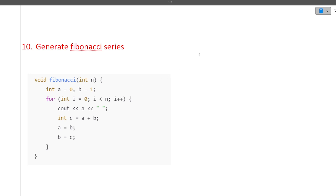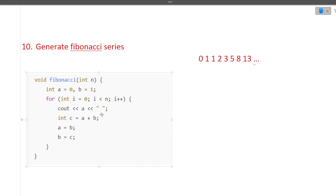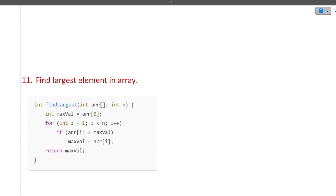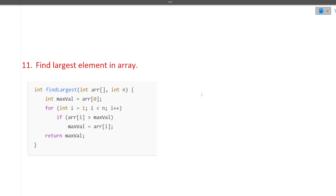The next question is: generate the Fibonacci series. Starting with 0, 1, 1, 2, 3, 5, 8, 13 — the current element is always the sum of the past two elements. The code is simple: c = a + b, a = b, b = c, just keep moving ahead. I hope this question is clear.